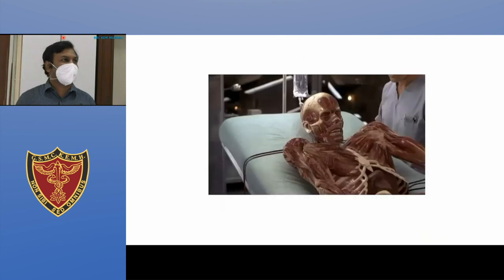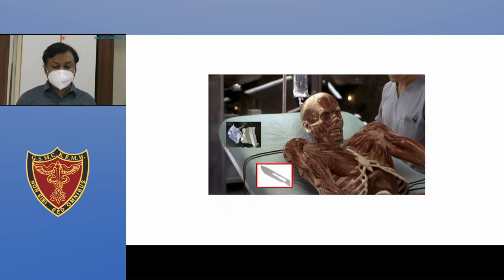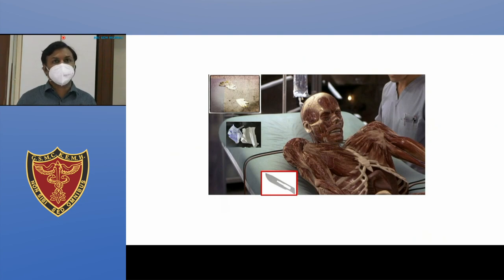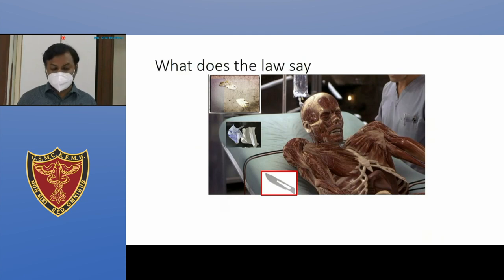Something you will encounter very soon, or might have already done — the dissection room. What are the different types of waste you will see? You can see used gloves, glove covers, and a scalpel blade. When you handle the tissues, the gloves get soiled. Probably the abdomen has been opened up, so you can see the gloves are soiled.